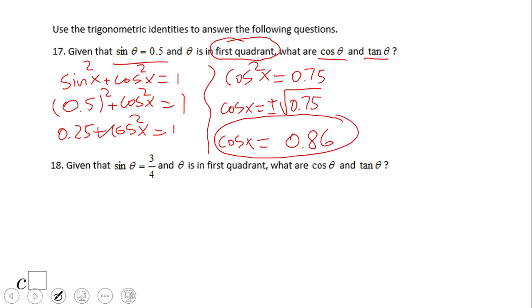So now if we have the cosine, we can go and find the tangent. Because tangent of x will be nothing more than sine of x over cosine of x. So in this case, we get 0.5, which was given to us, right, over 0.86. And that will be 0.58. And it's going to be a positive value, right? Both of them, sine and cosine are positive. So we did find also the tangent.